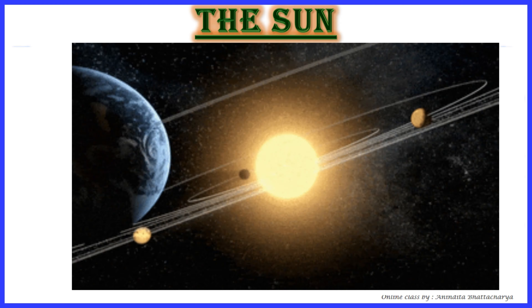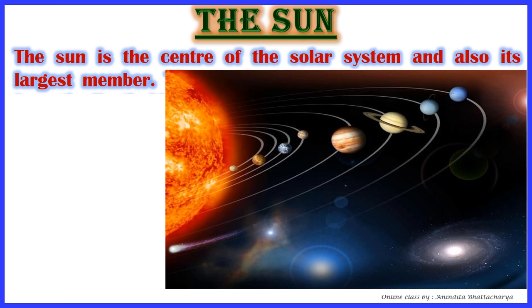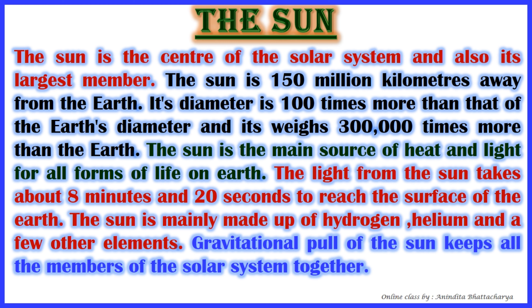Our next topic is the Sun. The Sun is the center of the solar system and remember it is the largest member of the solar family. The Sun is 150 million kilometers away from the Earth. Its diameter is 100 times more than that of the Earth's diameter.